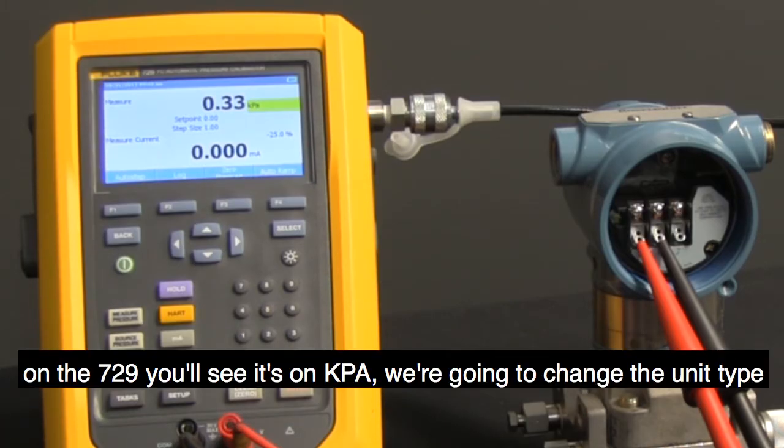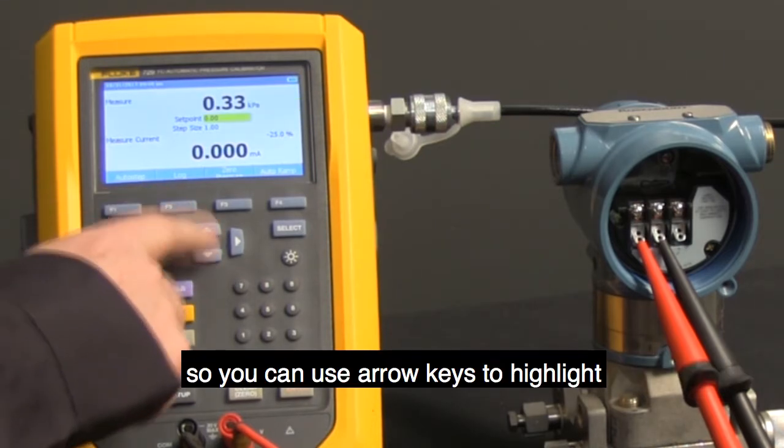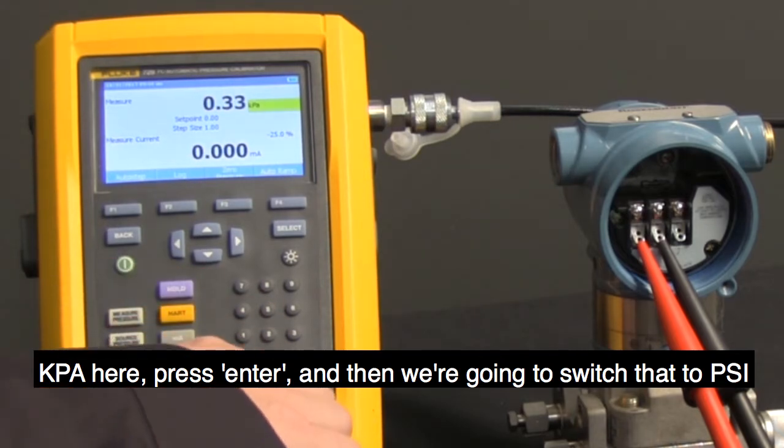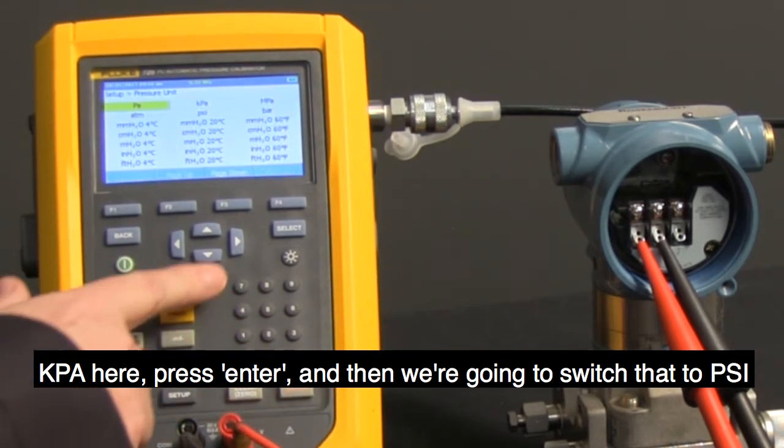On the 729, you'll see it's on KPA. We're going to change the unit type, so you can use the arrow keys to highlight KPA here. Press Enter, and then we're going to switch that to PSI.